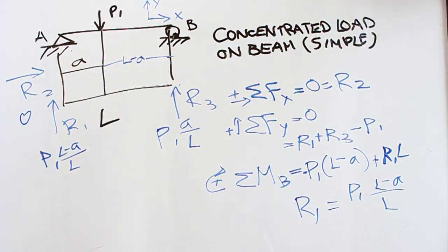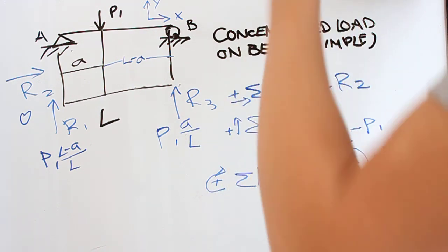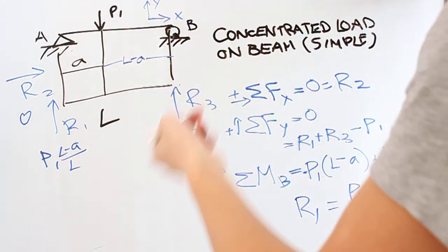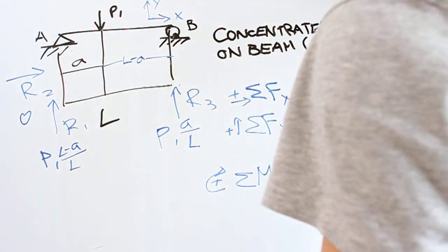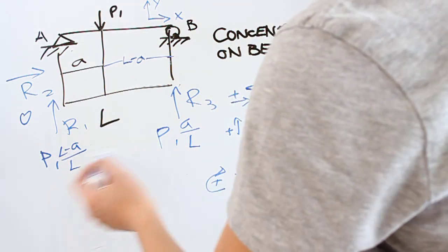So what does this mean? This tells us a lot because we've stayed abstract. Staying abstract gives you a very general understanding of any kind of problem in this sense. You have one side being L minus a over L and one side being a over L.